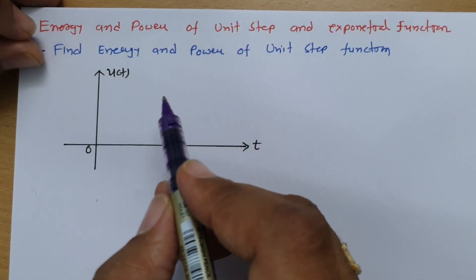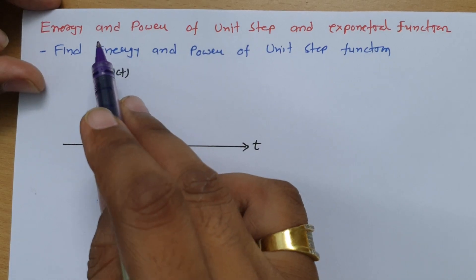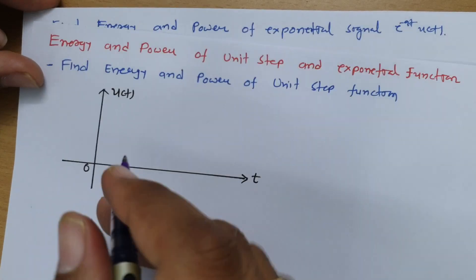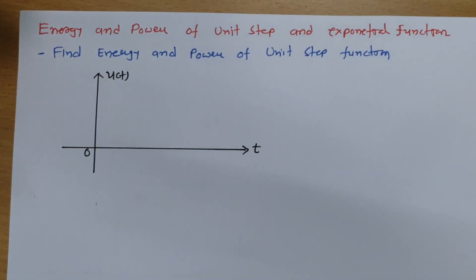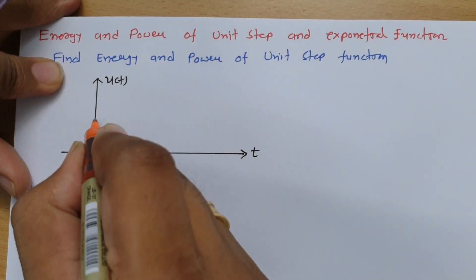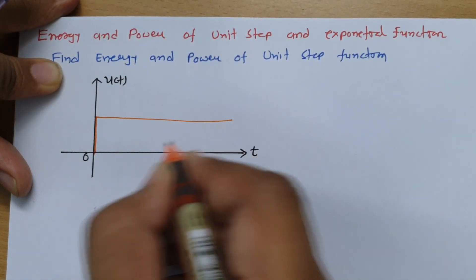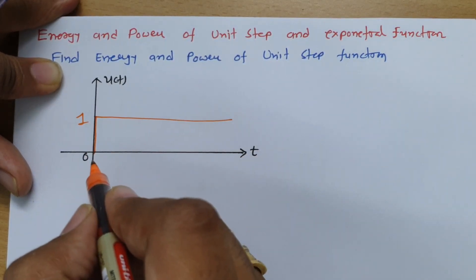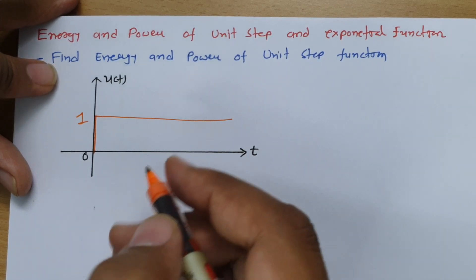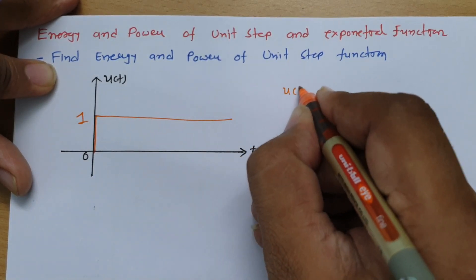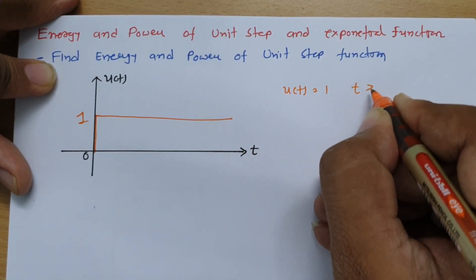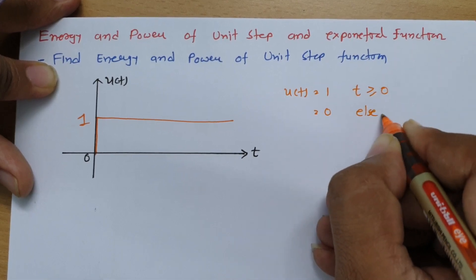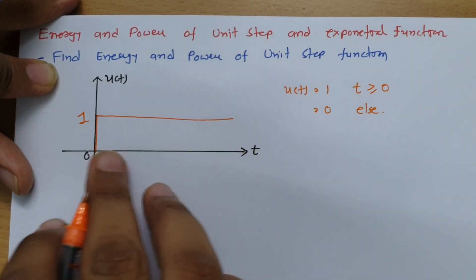First, we will calculate the energy and power of the unit step function. The unit step function u(t) is defined as 1 for t greater than or equal to 0, and 0 elsewhere. So its value is 1 from 0 to infinity.